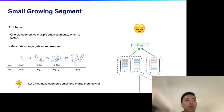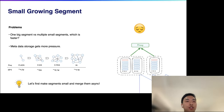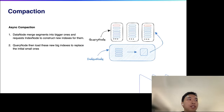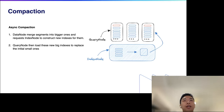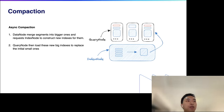Since we prefer small segments during insertion but larger segments once the index is built, why not build a small index first and then merge them together? This is essentially the compaction mechanism inside Milvus. Segments are sealed before they get too big during the insertion process to ensure short building time. The data node actively merges smaller segments together and passes them to the index node to build a larger index. Finally the query node loads this bigger index and replaces the indexes of the smaller segments that were merged, giving us a larger segment that supports more efficient search.